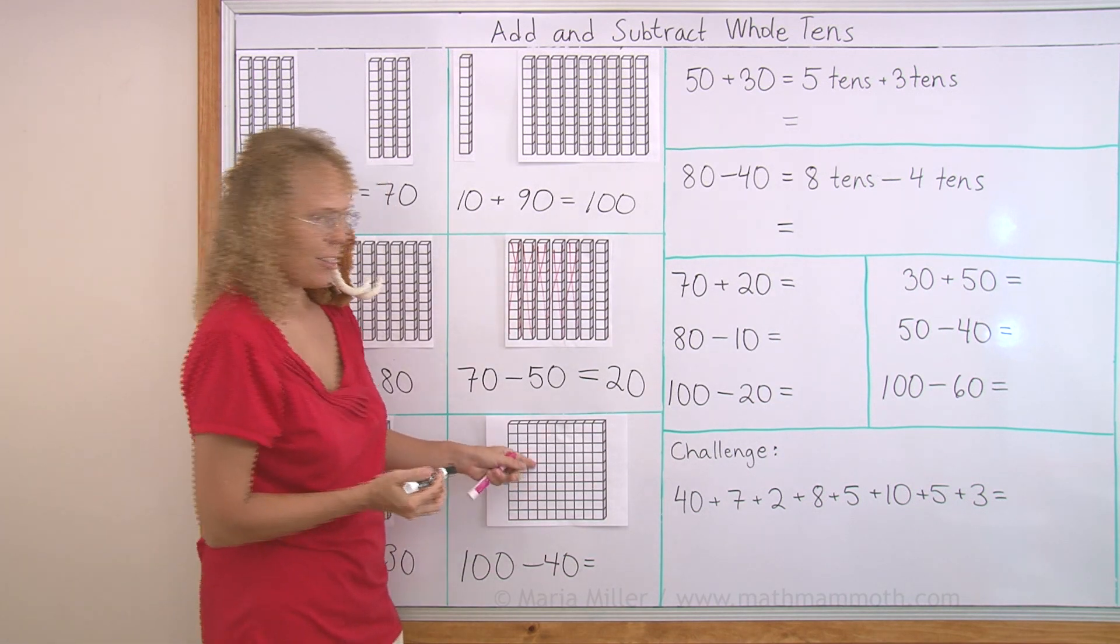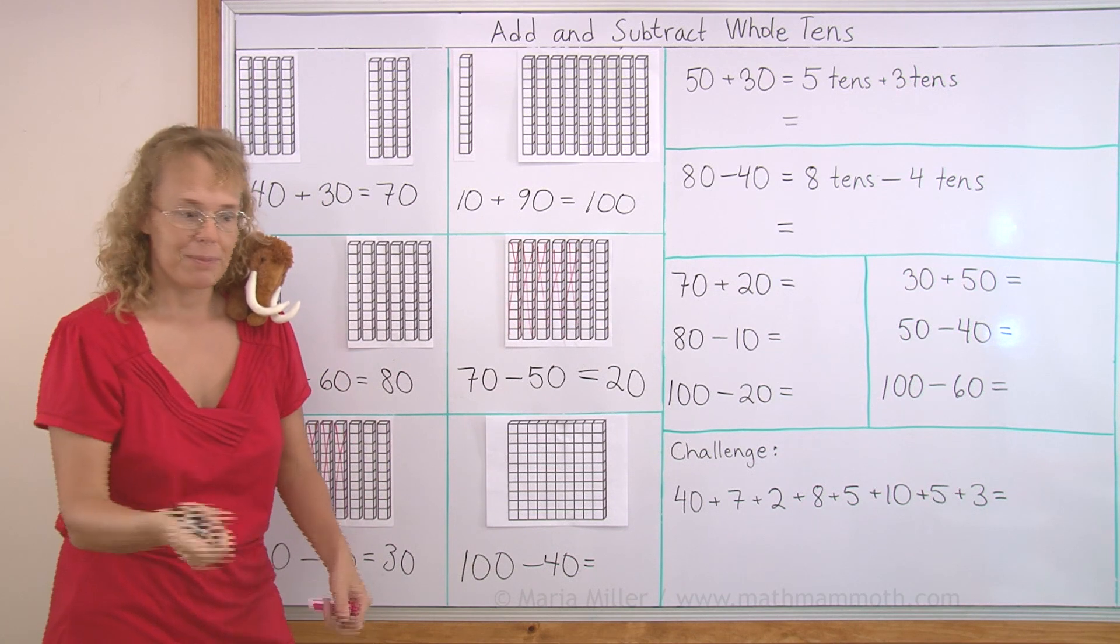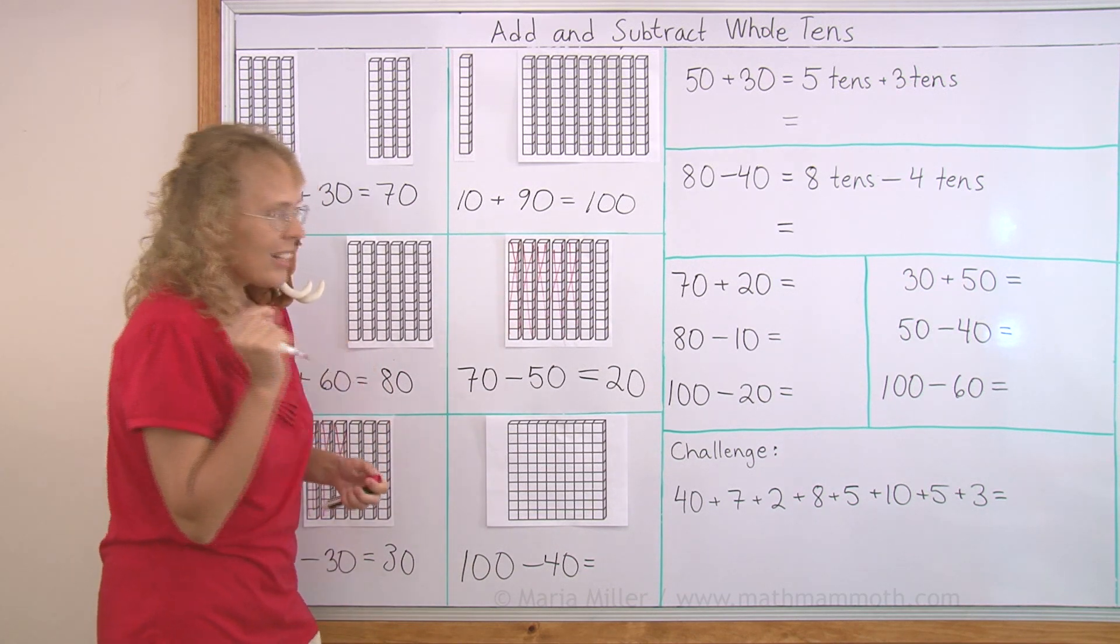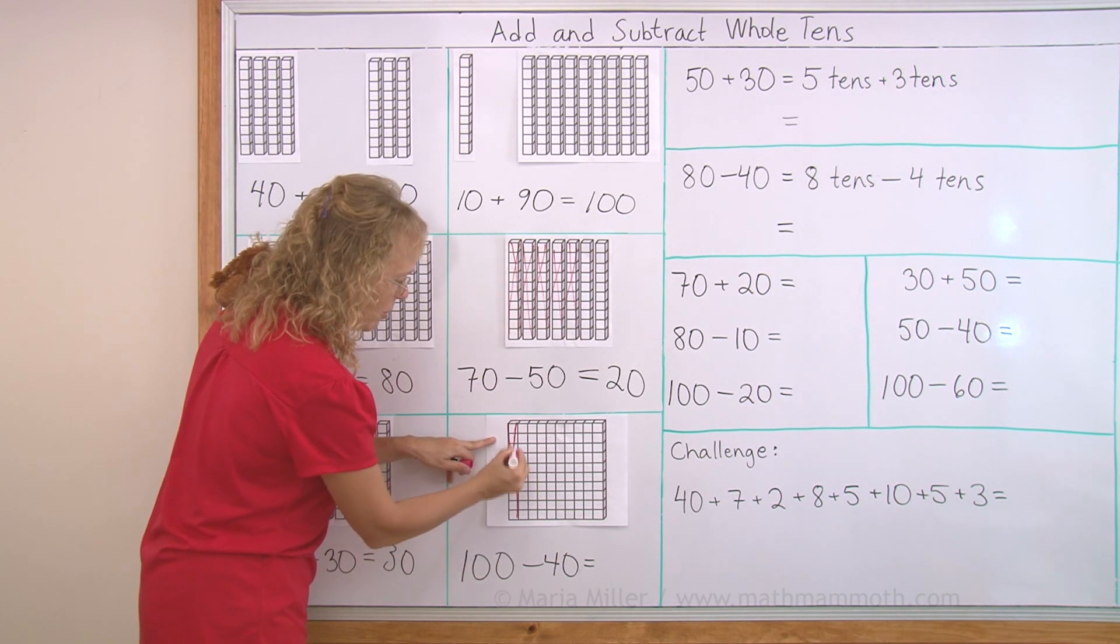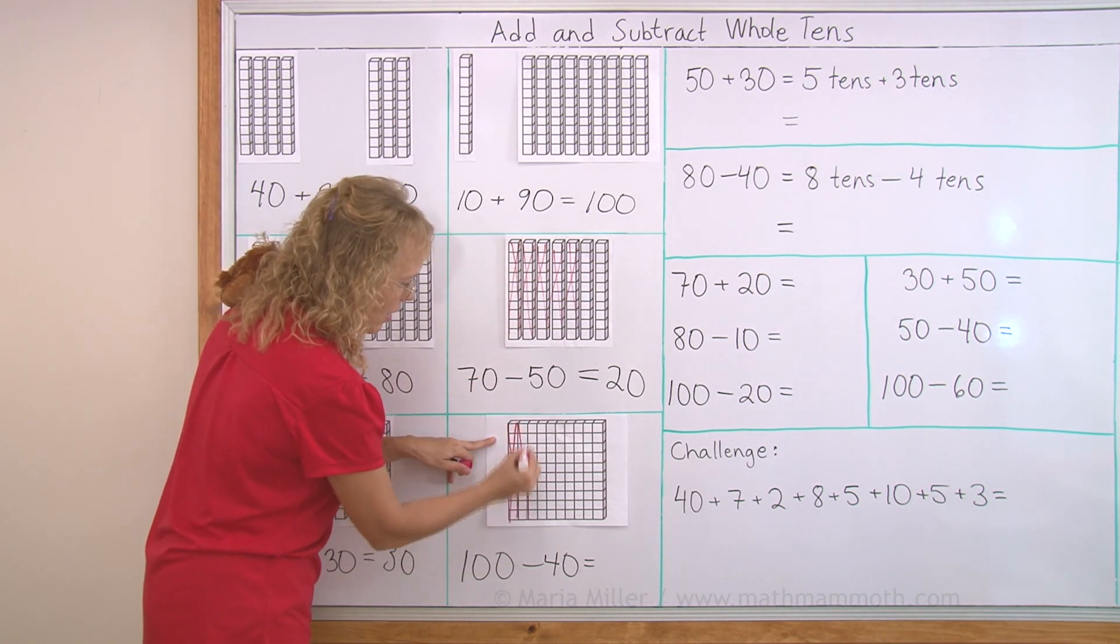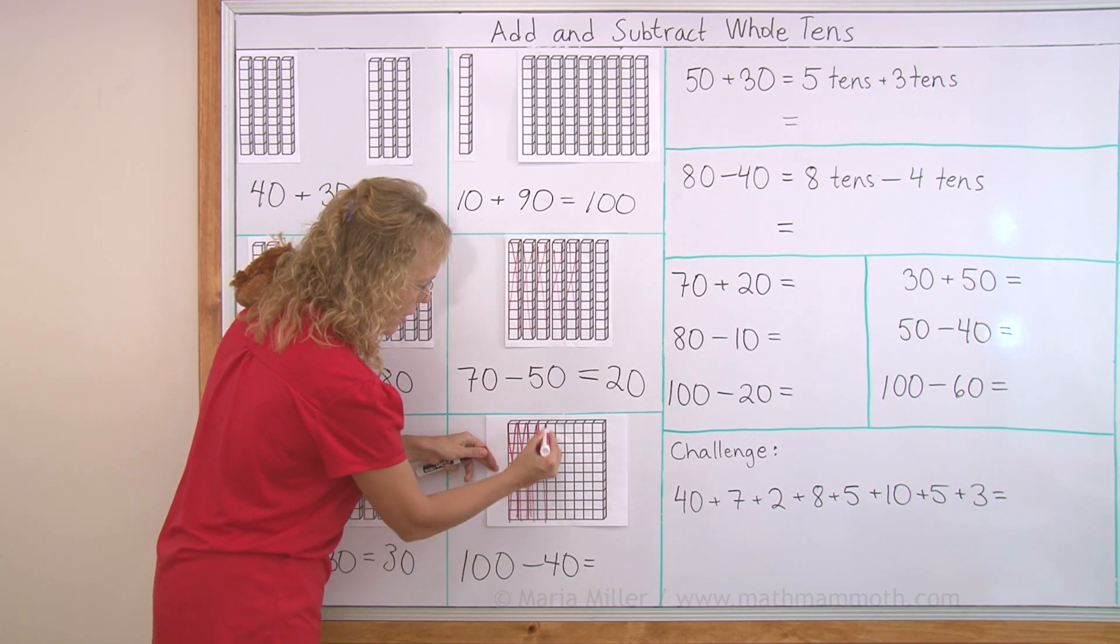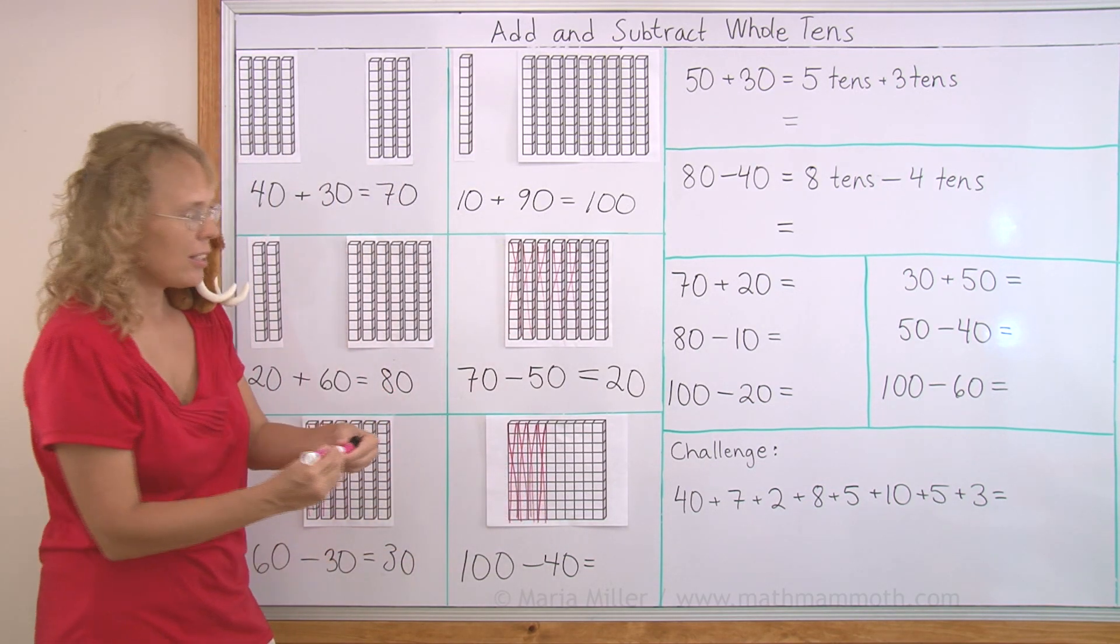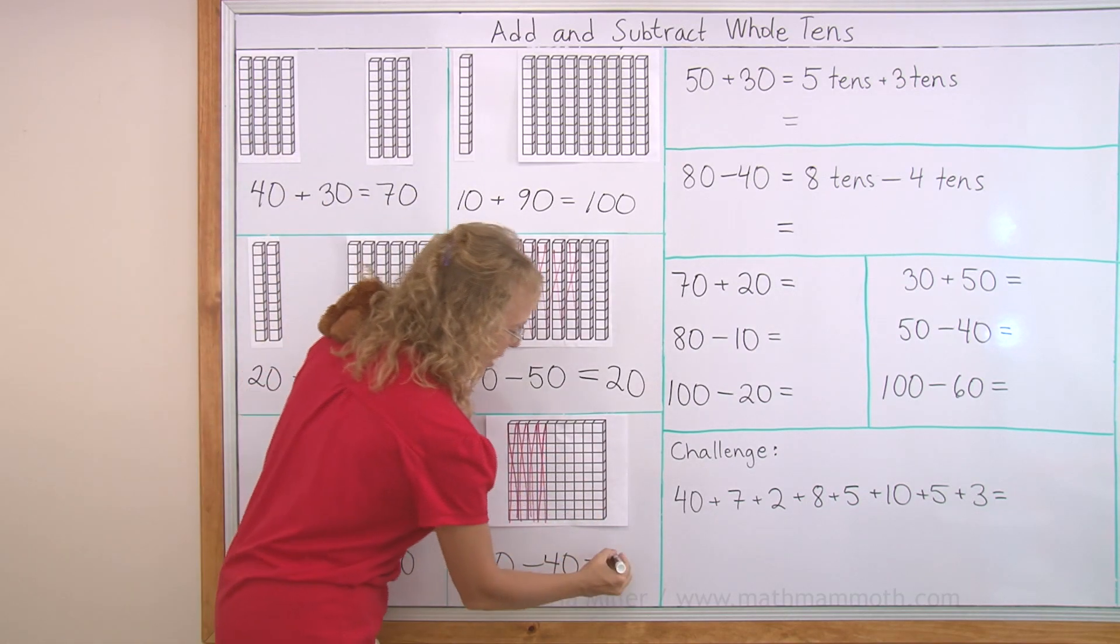Lastly, here's a hundred. If I take away 40, what will be left? I can still cross out tens. See, here's a ten. This one column is a ten. And another ten. And a third one. And a fourth one. If I cross out four tens, what do I have left? Six tens. Yes. Sixty.